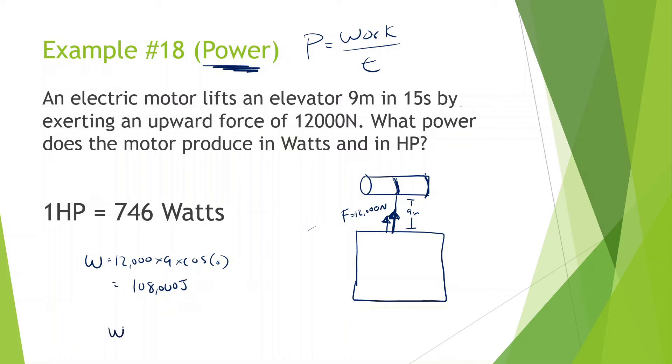And now we know power is equal to work divided by time. So we can do 108,000 joules divided by 15 seconds, and we get 7,200 watts.